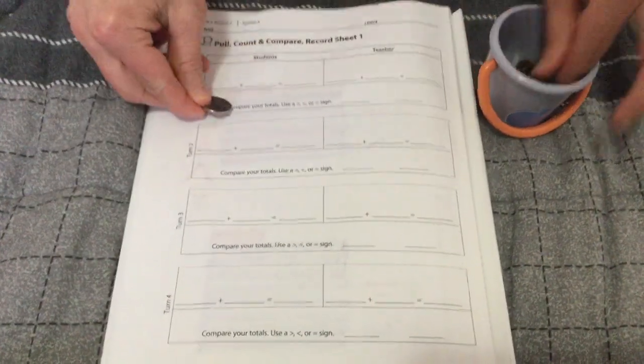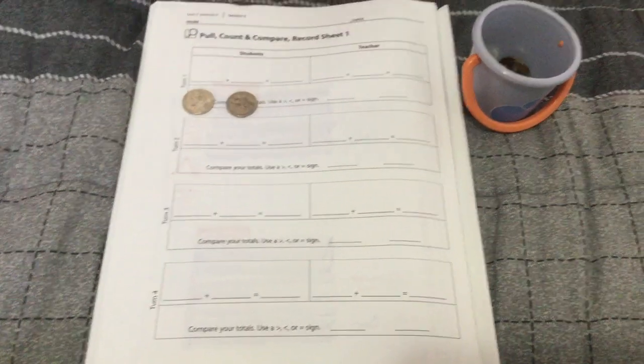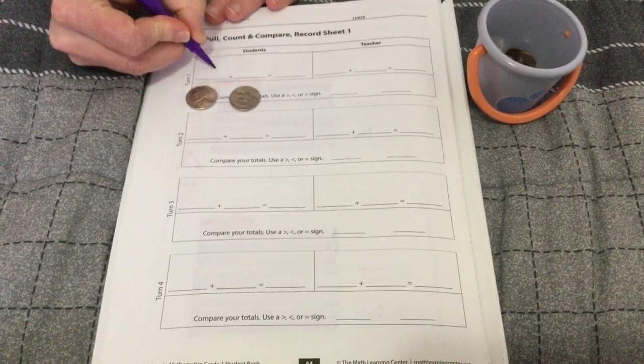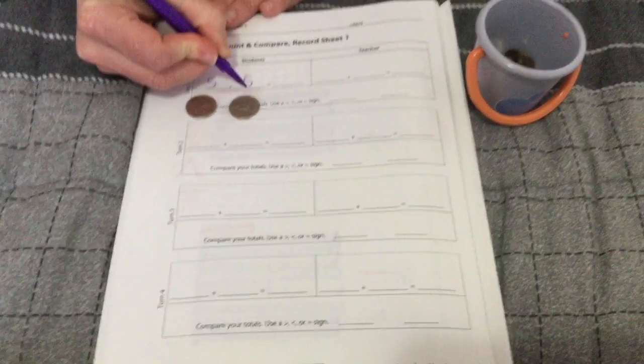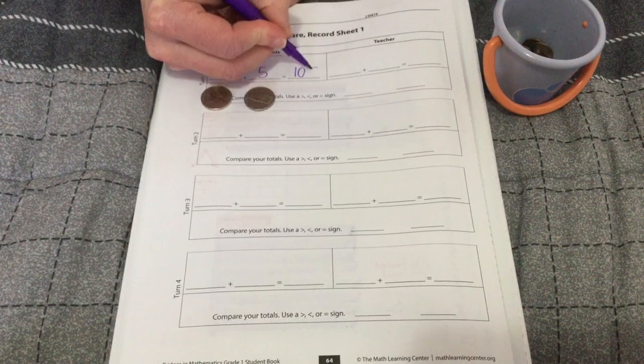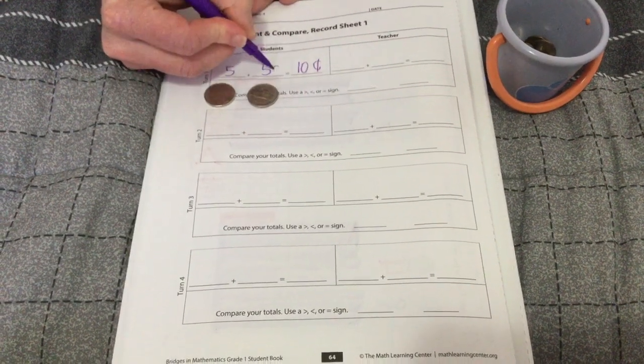On my first turn, I pulled out a nickel and another nickel. Five cents plus five cents equals ten cents. I better put that cents mark in there.